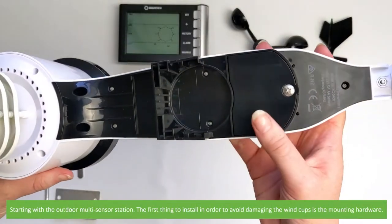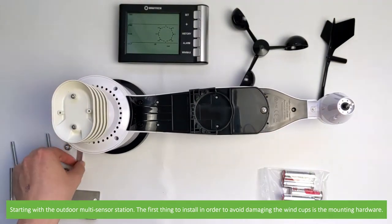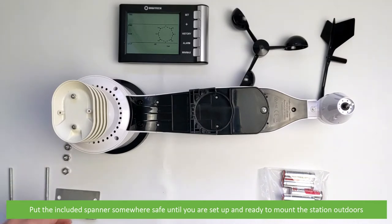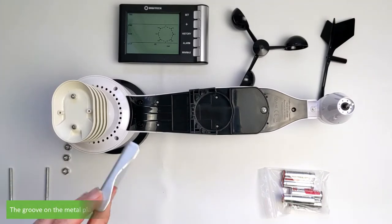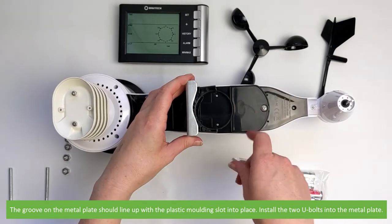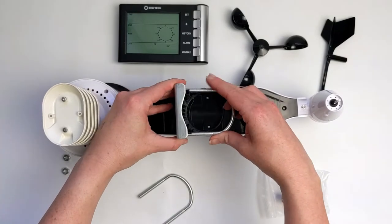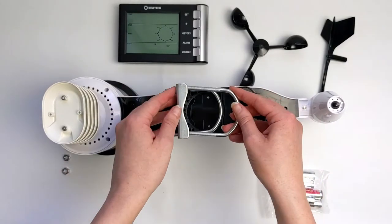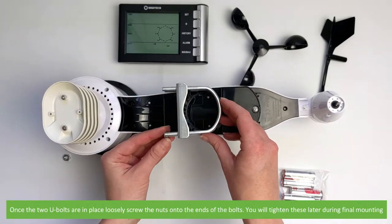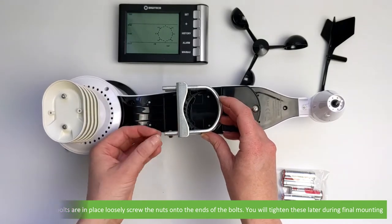Starting with the outdoor multi-sensor station, the first thing to install in order to avoid damaging the wind cups is the mounting hardware. Put the included spanner somewhere safe until you are set up and ready to mount the station outdoors. The groove on the metal plate should line up with the plastic molding then slot into place. Install the two U-bolts into the metal plate. Once the two U-bolts are in place, loosely screw the nuts onto the ends of the bolts. You'll tighten these later during final mounting.